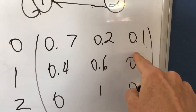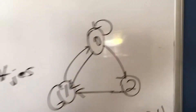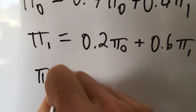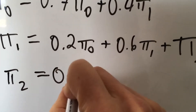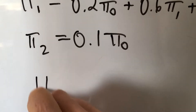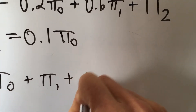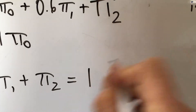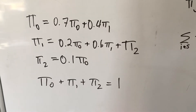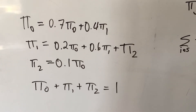For transitioning into state 2, there's only one state that transitions into state 2, and that's state 0 — we can verify that on the diagram. So, pi of 2 is just 0.1 times pi 0. To finish off, we have pi 0 plus pi 1 plus pi 2 equals 1. This gives us a system of equations we can solve to get the long-run steady-state probabilities of being in each state.